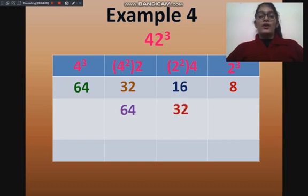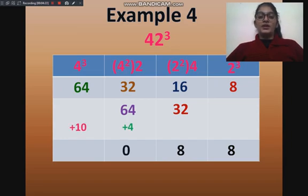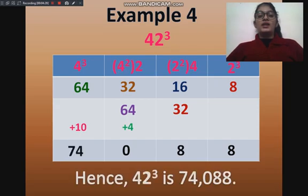Now we will add all them up. First, we will write 8, then 16 plus 32 is 48 — 8 will be written and 4 will be carried out. Then 32 plus 64 plus 4 is 100 — 0 will be written and 10 will be carried out. Then 64 plus 10 is 74. Hence, 42 cube is 74,088.